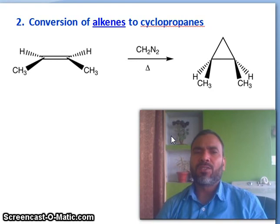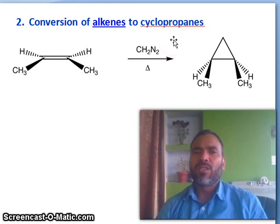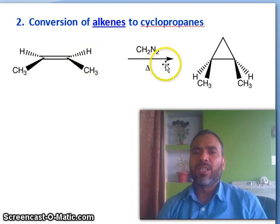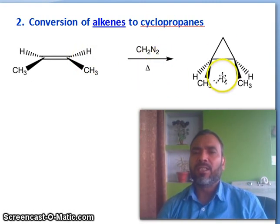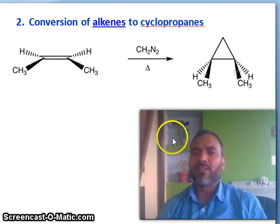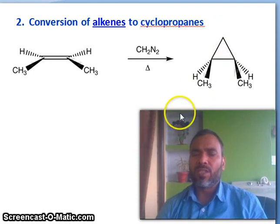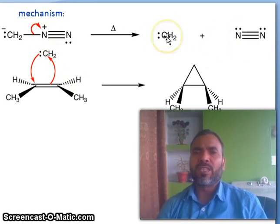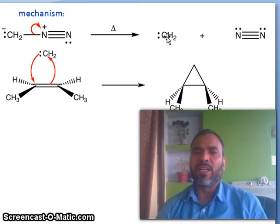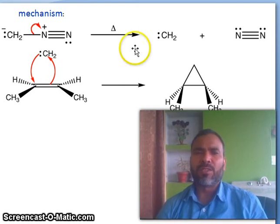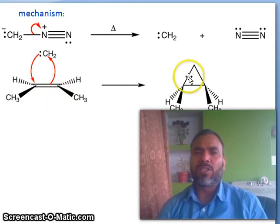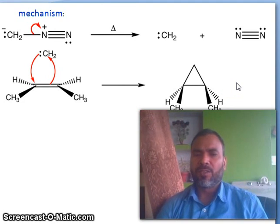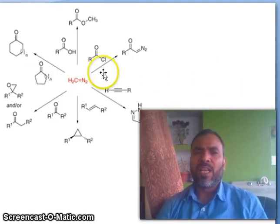Another very important application is the conversion of an alkene to cyclopropane. This is a symmetrical alkene — CH3, CH3, hydrogen, hydrogen — reacting with Diazomethane under heating to give a cyclopropane product via a CH2 insertion reaction. The mechanism: nitrogen is removed to give a carbene, which attacks the double bond to give the cyclopropane (cyclized) product. Carbene has two types — singlet and triplet — which we will discuss in the next video.